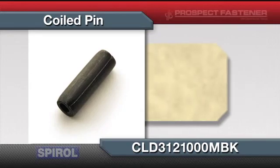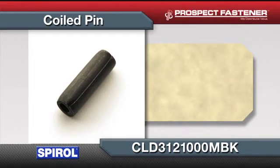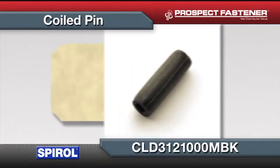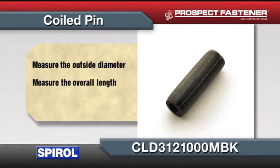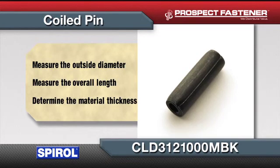Coiled spring pin, sometimes known as spiral spring pin. In order to properly identify a coiled spring pin, there are two basic dimensions to identify: an outside diameter and an overall length. There is a third dimension to consider when identifying a coiled spring pin, which is the material thickness.